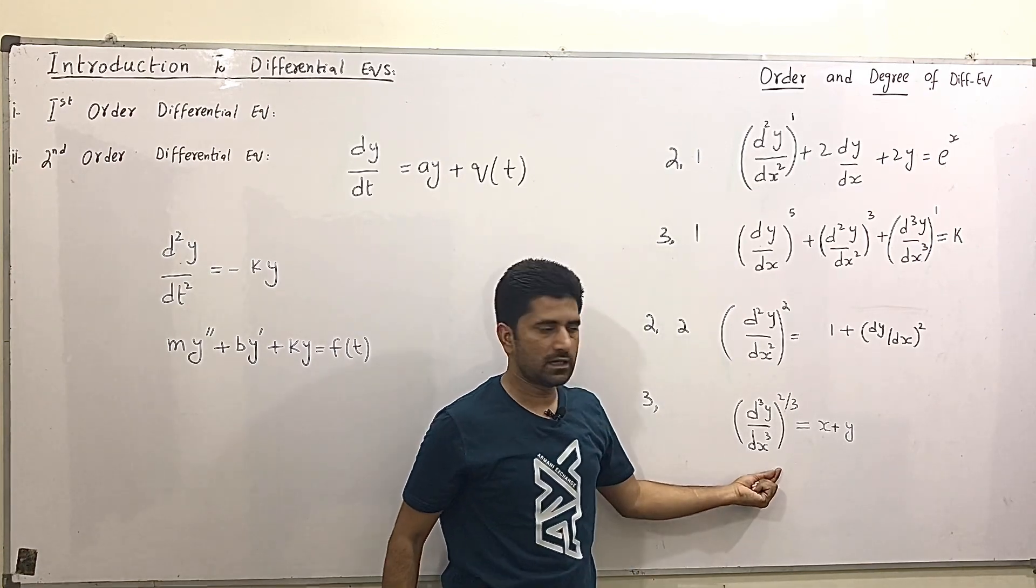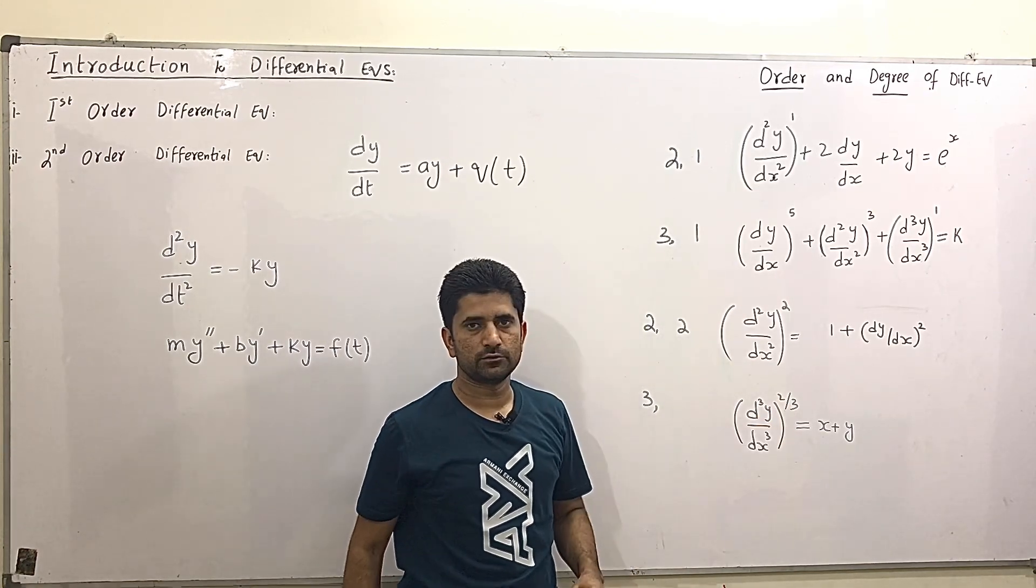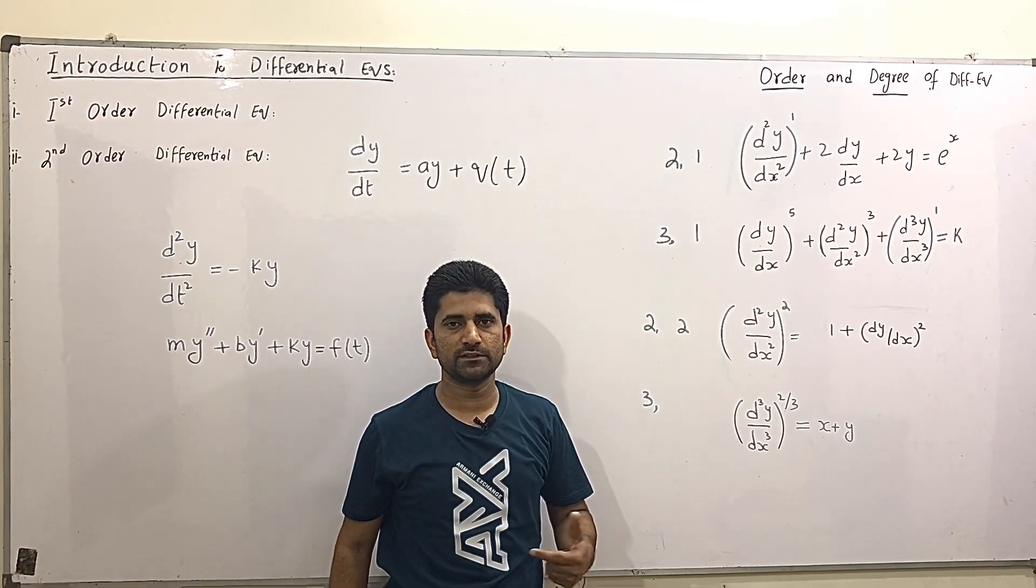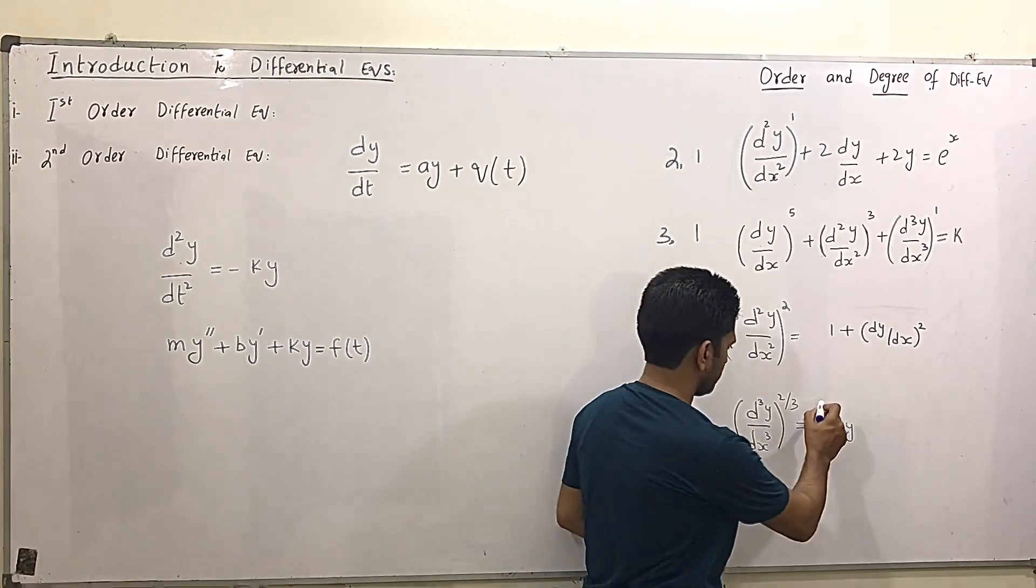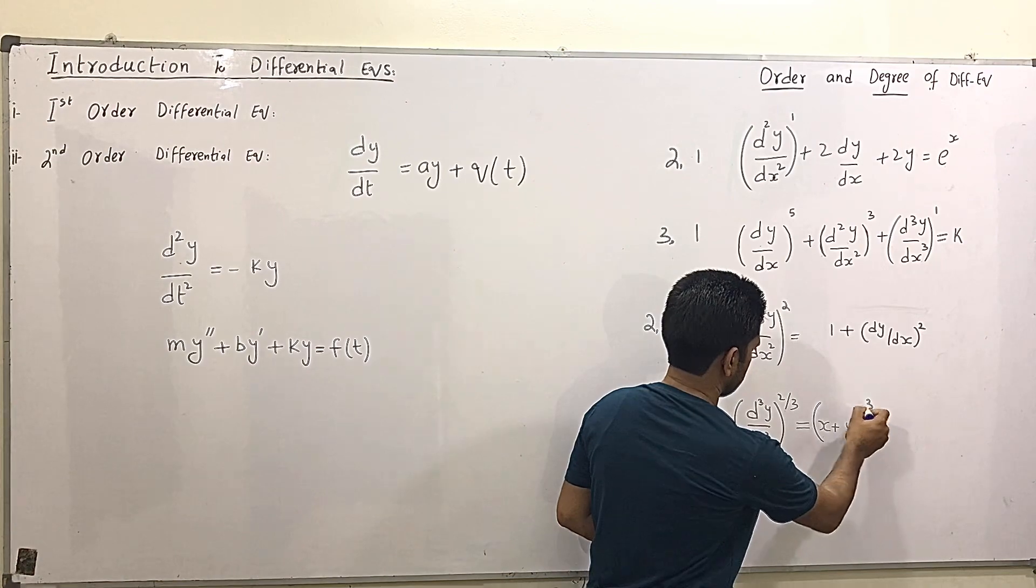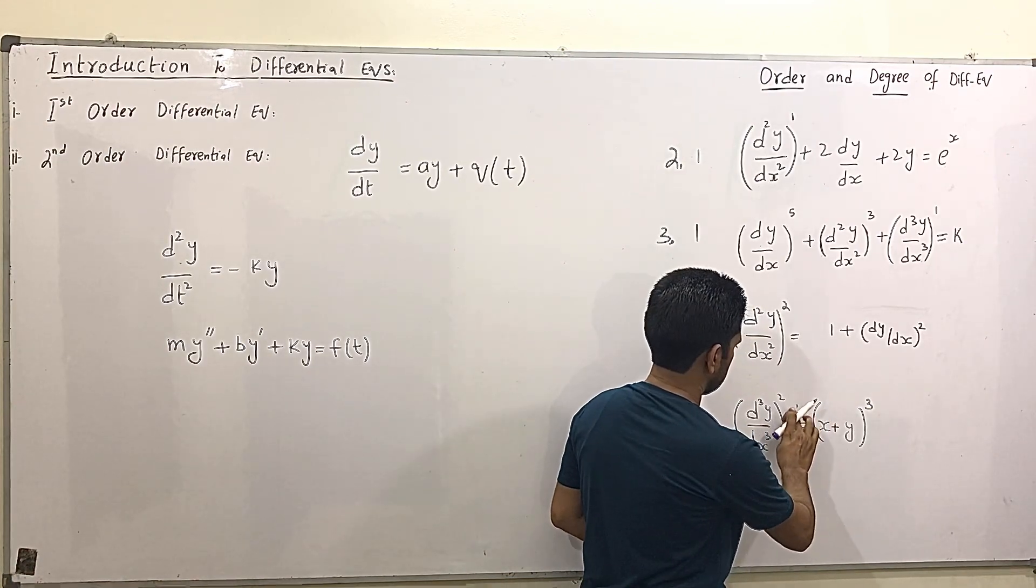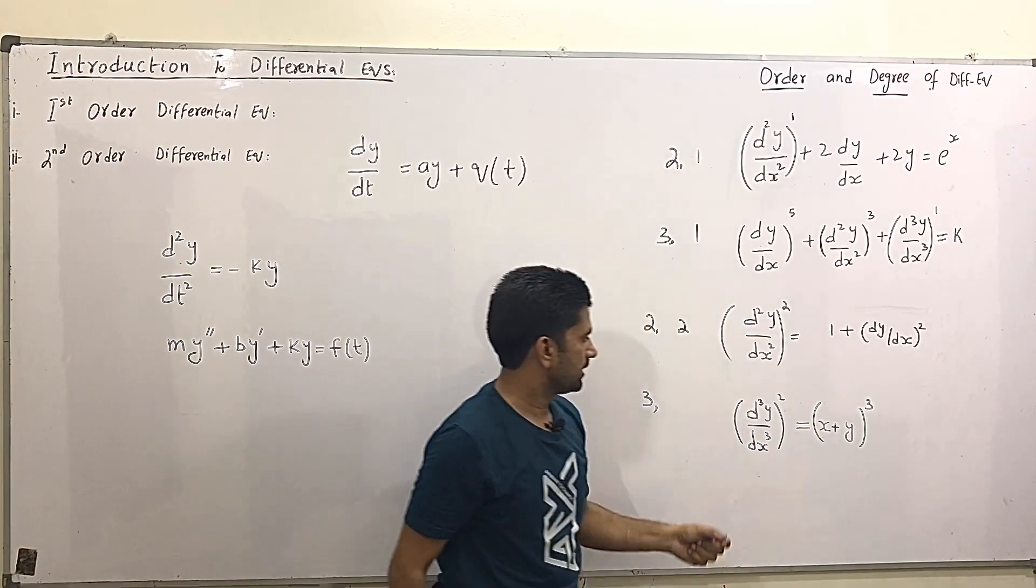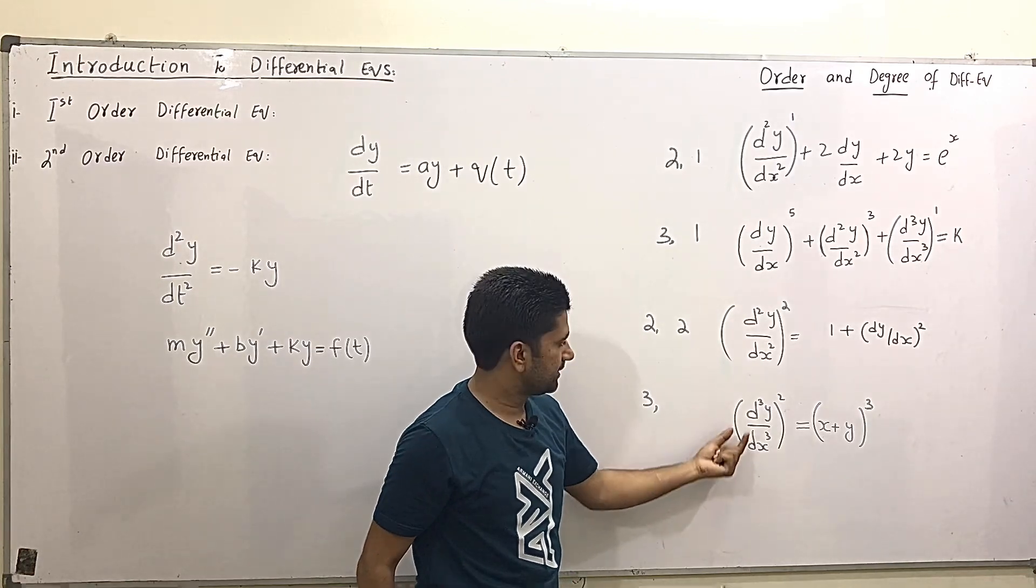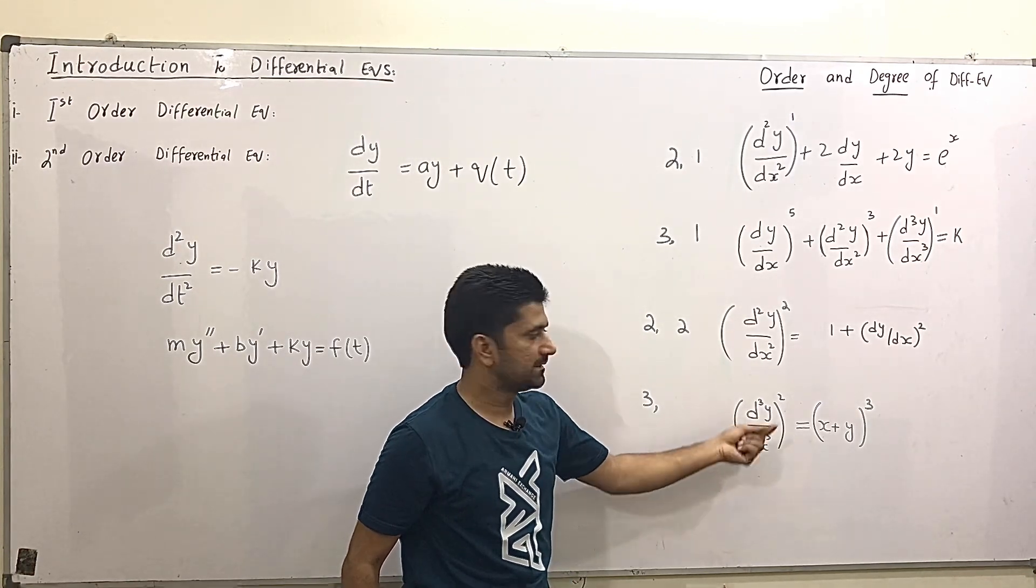And this last one I have 2 by the third here. So I take cube root on both the sides. So this will be cancel out. And this also be cancel out. So the highest derivative is third and its degree is 2.